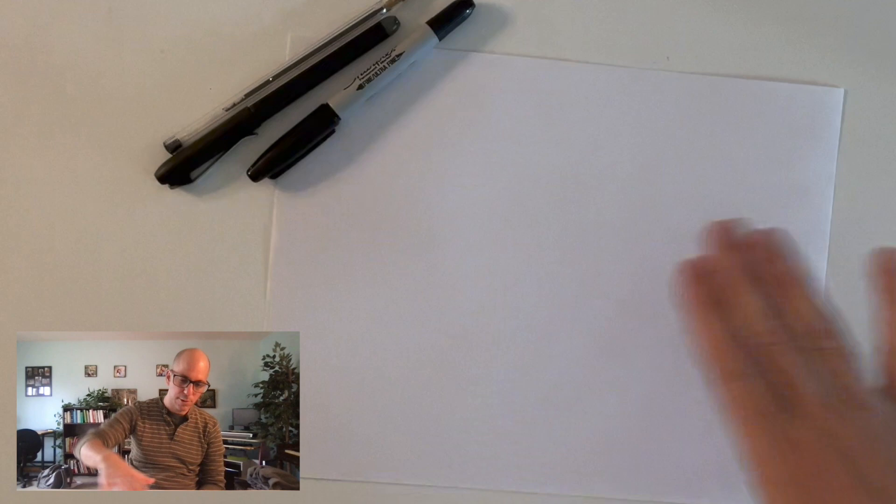Hey everybody, I'm gonna draw a couch. My paper is oriented landscape because couches are kind of sideways. I've got my pens here and I'm gonna start with my thick pen.